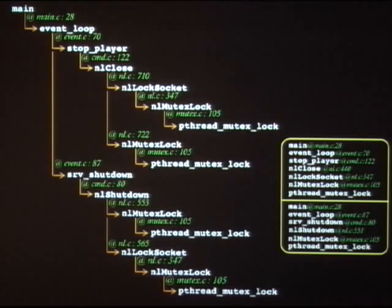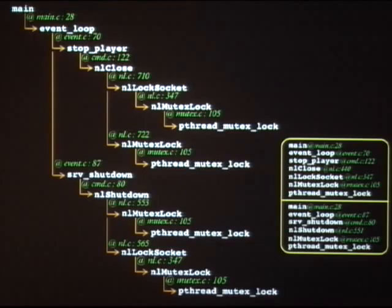The effect of false positives is purely a performance concern, not a correctness concern. Ironically, false positives are not always a cause for a drop in performance — we have seen instances where false positives actually improve performance because they reduce contention. There's also a second source of false positives besides precision: input dependencies. For some combinations of inputs you might deadlock; for others, you might not.